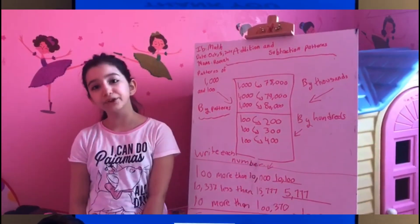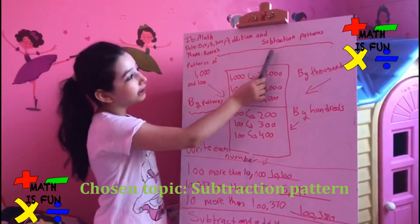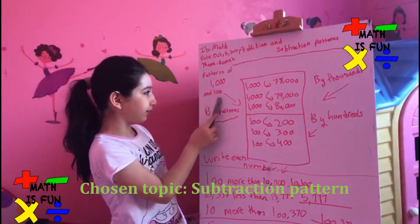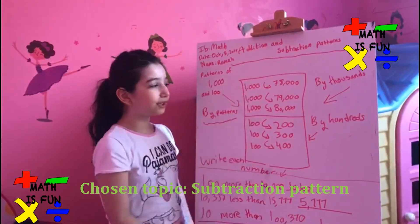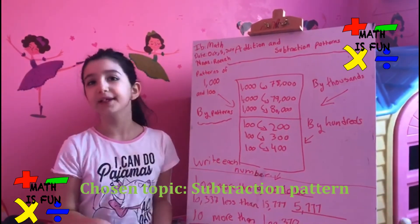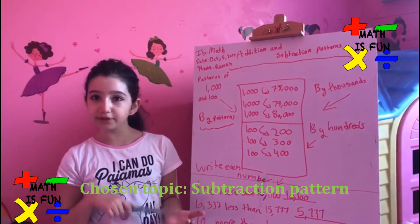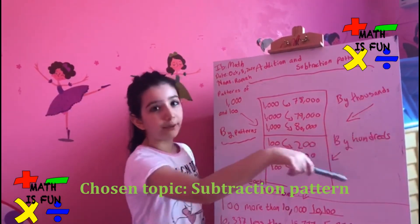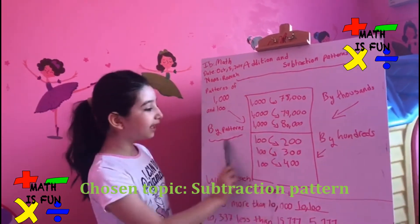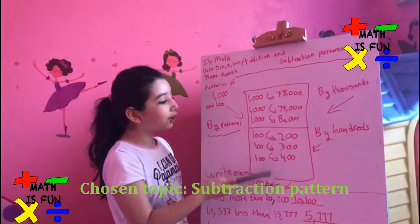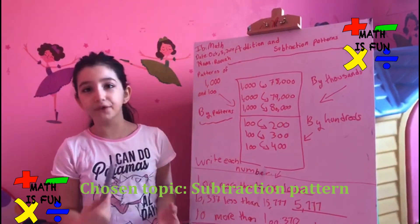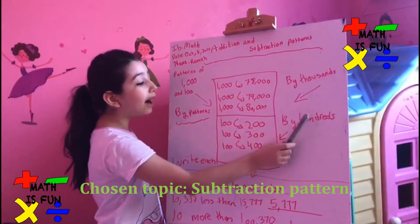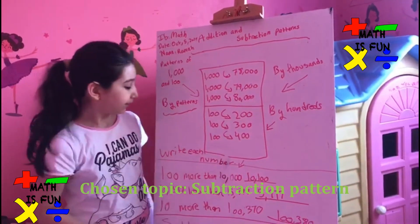Hi, everyone. Today I'm going to introduce you to addition and subtraction patterns. Now we're going to do patterns of 1,000. By each 1,000: 78,000, 79,000, 80,000, 81,000, 82,000 and more. And by each 100: 200, 300, 400, 500 and more.